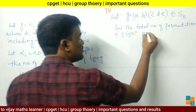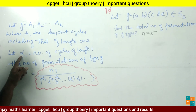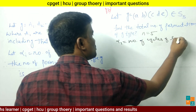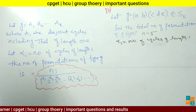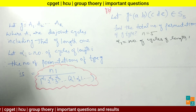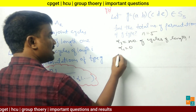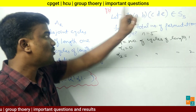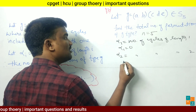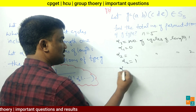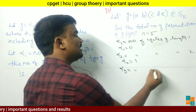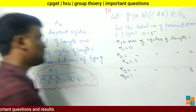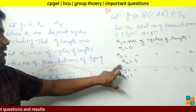The given group is S5, so n equals 5. Alpha_1 equals the number of cycles of length 1; we don't have any cycle of length 1, so alpha_1 = 0. Alpha_2 equals the number of cycles of length 2; we have one cycle (AB), so alpha_2 = 1. Alpha_3 equals the number of cycles of length 3; we have one cycle (CDE), so alpha_3 = 1.